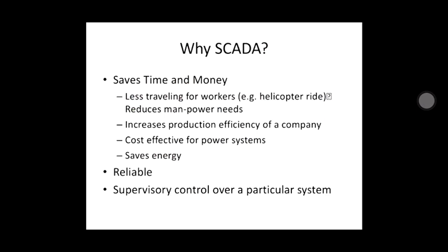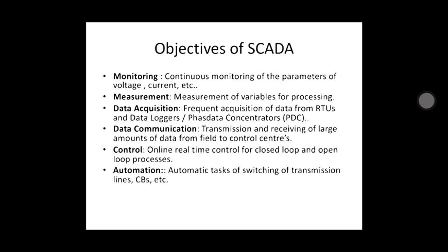Objectives of SCADA: First is monitoring — continuous monitoring of parameters such as voltage and current. In energy systems like generation and transmission systems, SCADA monitors voltage fluctuations, overcurrent, and overflow. It checks, monitors, measures, and collects data, then communicates it through a data communication channel and controls it automatically.